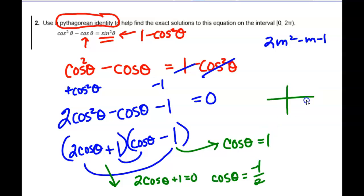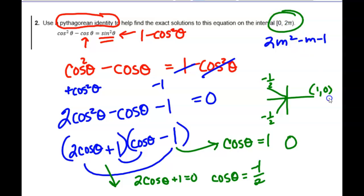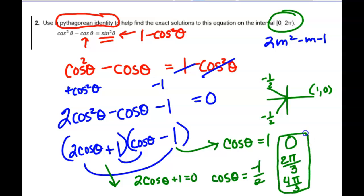Now I'm looking for all the places where the x value is one or negative one-half. This is zero because it says between zero and two pi not including two pi, so I call that spot zero. That one is two pi over three, and this one is four pi over three. Any questions? Don't need a plus or minus two pi n when it says zero to two pi — there's not multiple solutions, there's just those three.